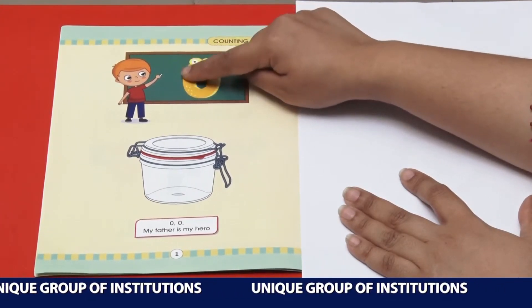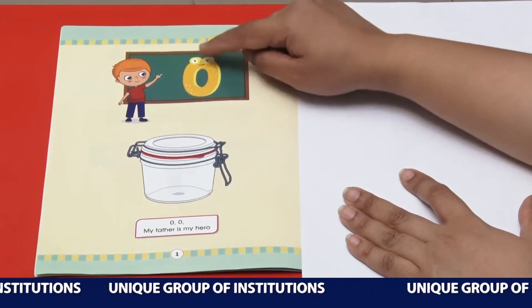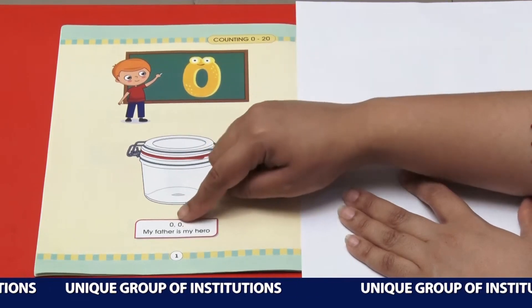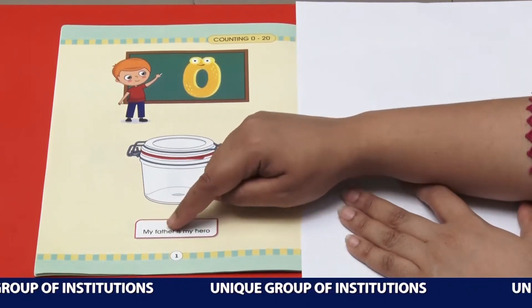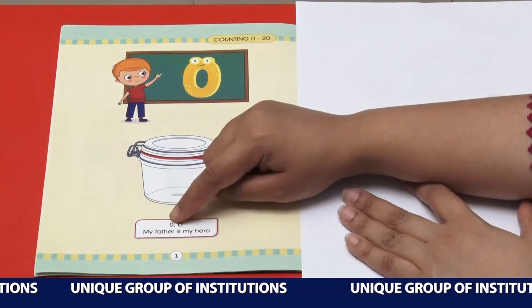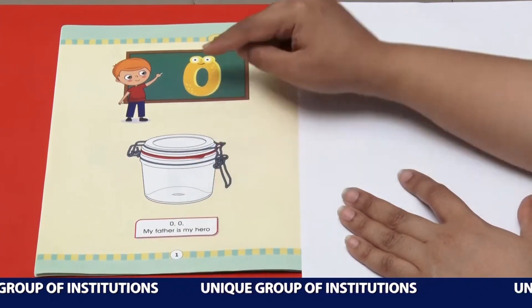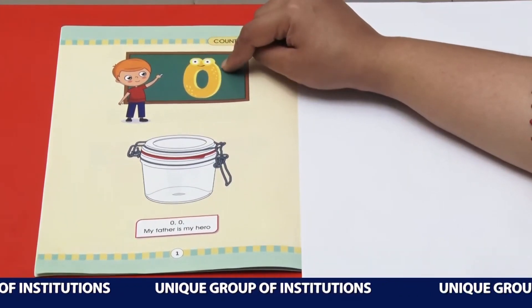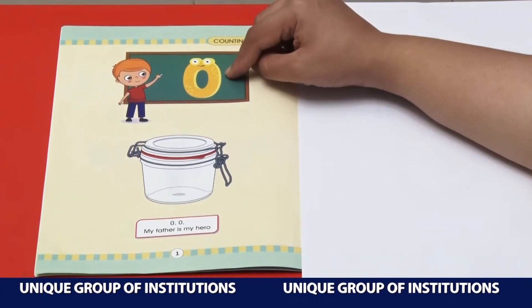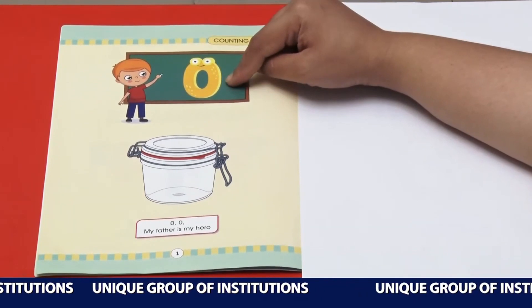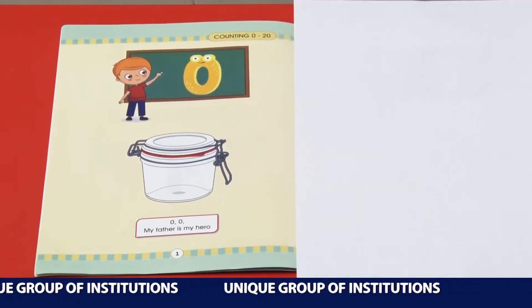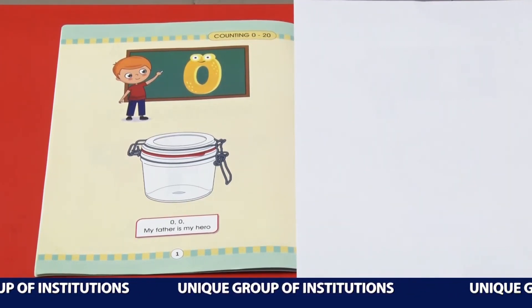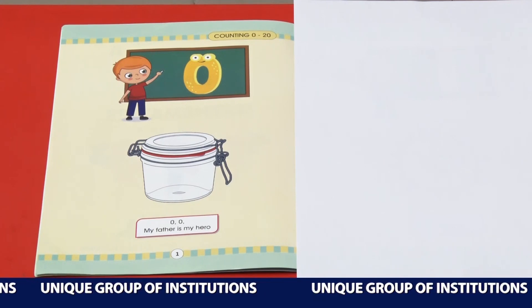0 is round and round. 0 means nothing. 0, my father is my hero. Today, which number have we learnt? We have learnt number 0. The name of this number is zero, and zero means nothing. I hope now you recognize the number zero and you know zero means nothing. I hope this lecture is informative for you. Thank you so much.